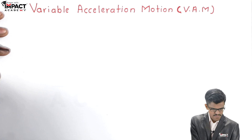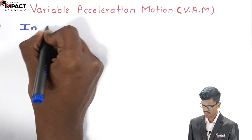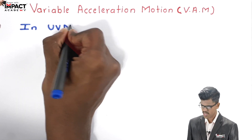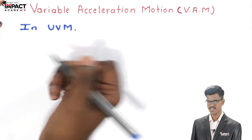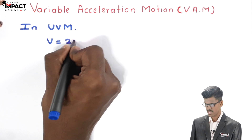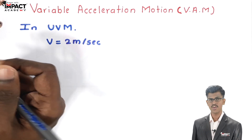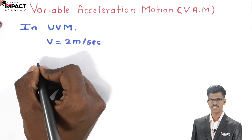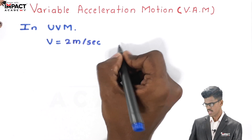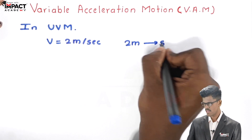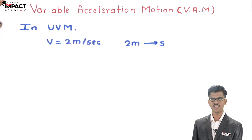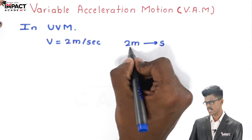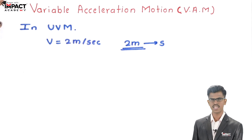In uniform velocity motion, the velocity of the particle is uniform. Means if the velocity of particle is 2 meters per second, then the particle covers 2 meters distance every second. If in one second the particle covers 2 meters distance, then in the next one second it covers another 2 meters distance.